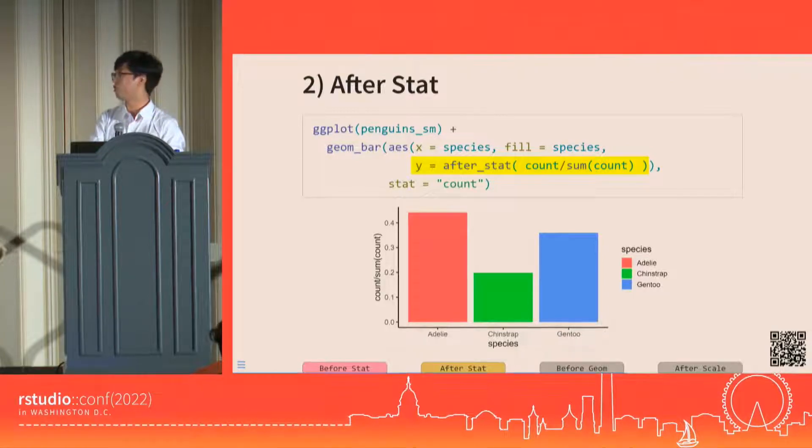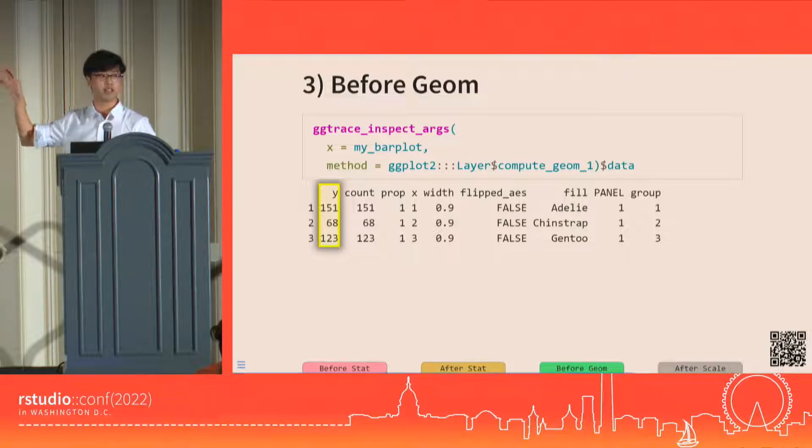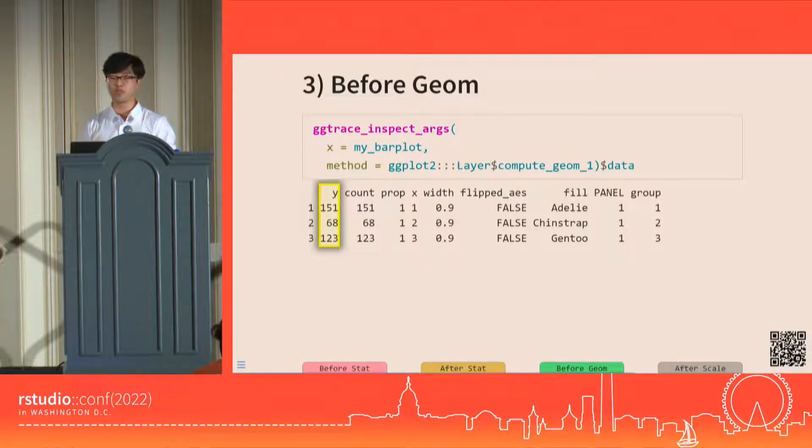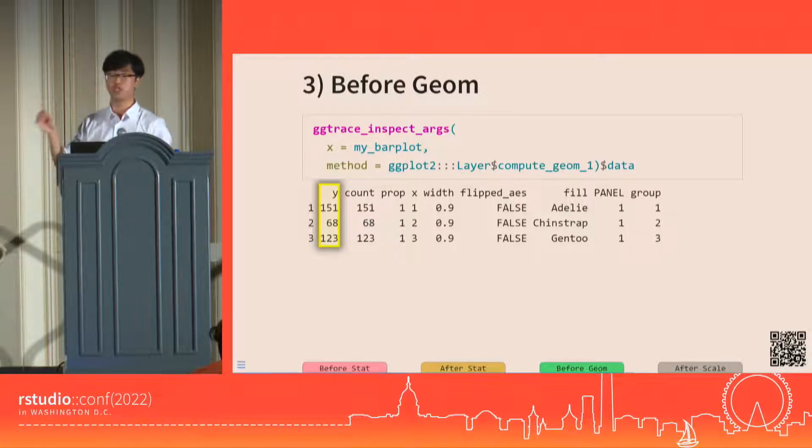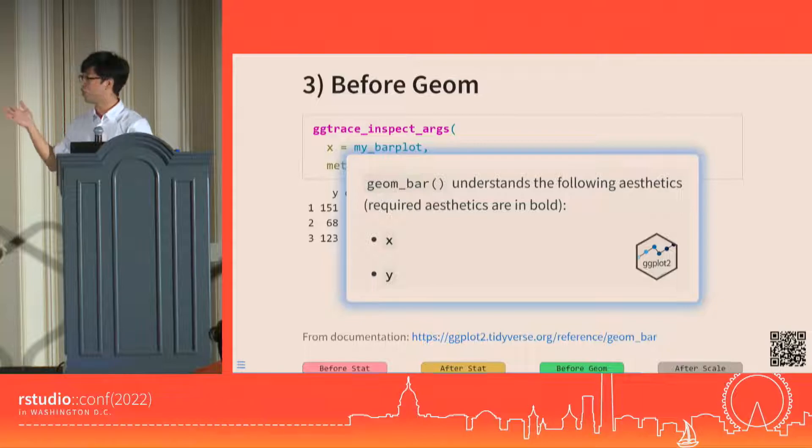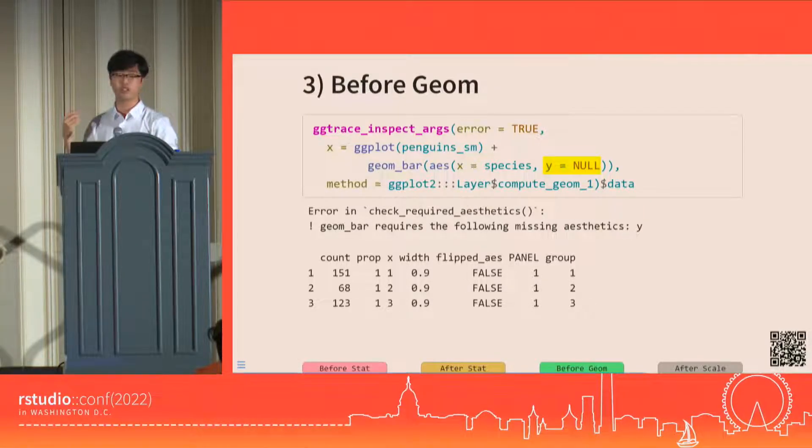Any after stat mappings that we declare like this will get applied to the data for us to see by the time the data reaches the before geom stage. We see now the data has that y column present when we intercept it here. Just like in the before stat, the before geom data validates the layer's choice of geom. Here we have both x and y columns present and that satisfies our layer's geom, which is geom_bar, and it requires both x and y aesthetics.